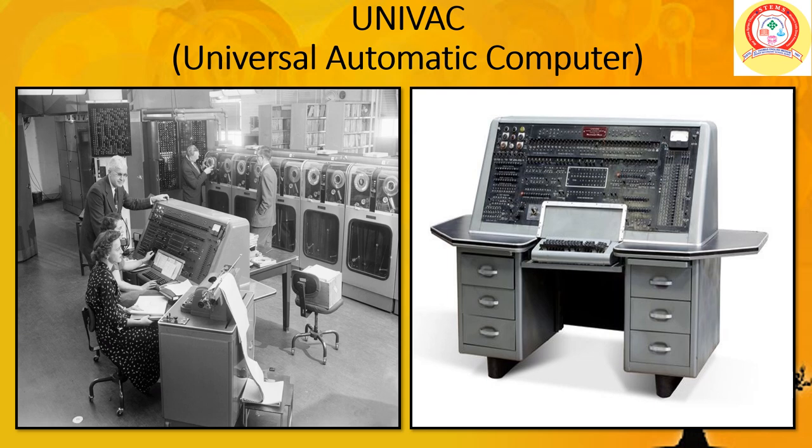UNIVAC — Universal Automatic Computer. This computer was developed in the year 1951 by J. Presper Eckert and John Mauchly. It weighed approximately 13,000 kilograms and occupied an area of 35.5 square meters. This was the first commercially available electronic computer and also the first computer to handle both numeric and text data.